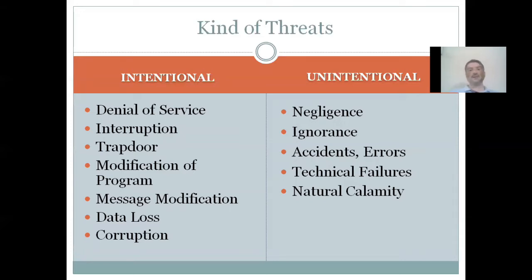Intentional threats include denial of service — where you want to access something and that service is denied to you. Interruption — where you are working on a project or application and the work suddenly stops or is prevented from moving forward. Trapdoor — as the name suggests, it is a backdoor entry where someone gains access to your system not through the front door, but through other hidden means, making it invisible to you.